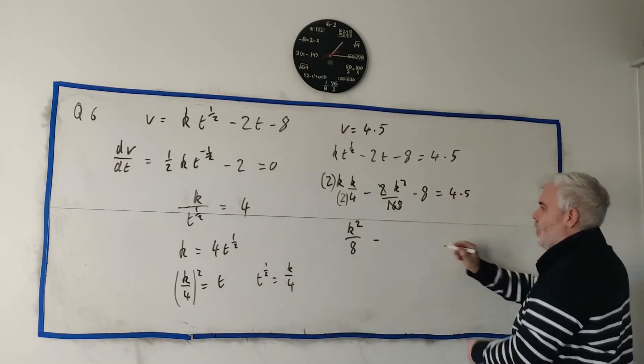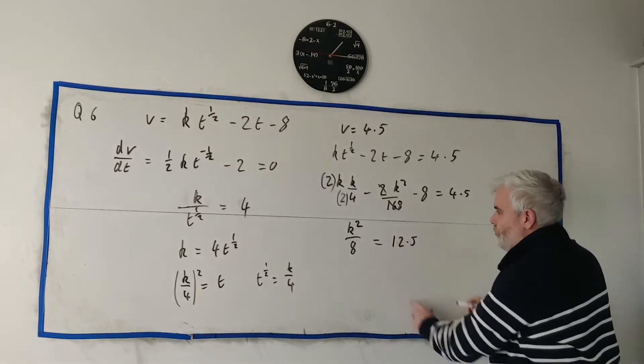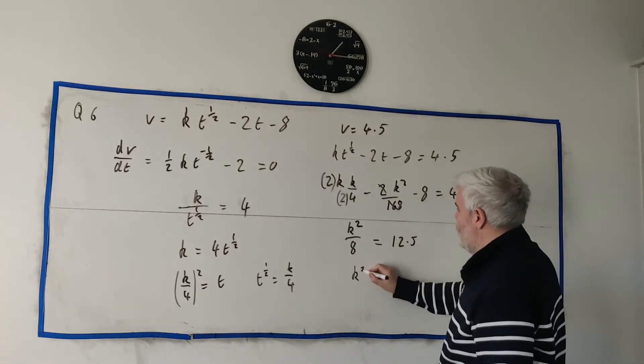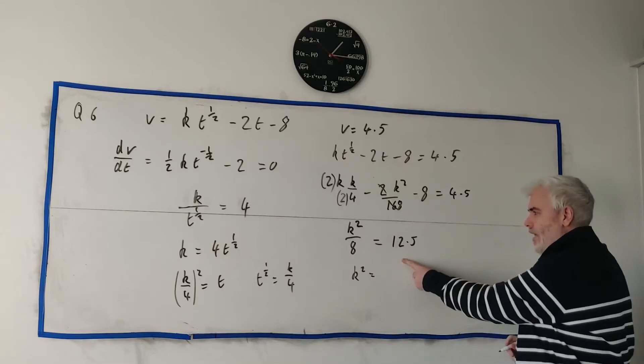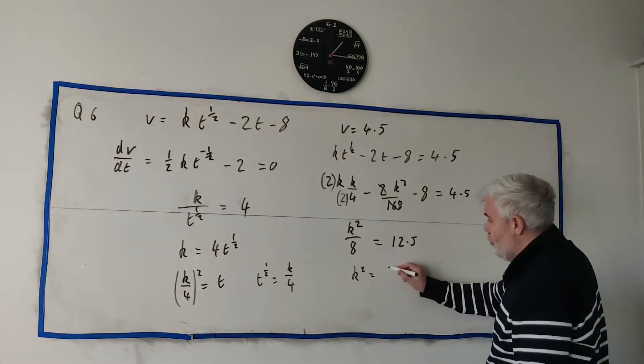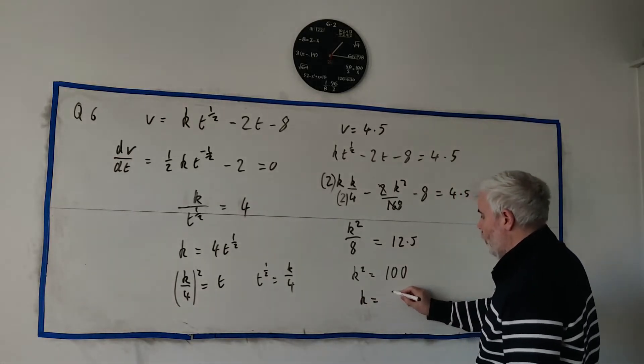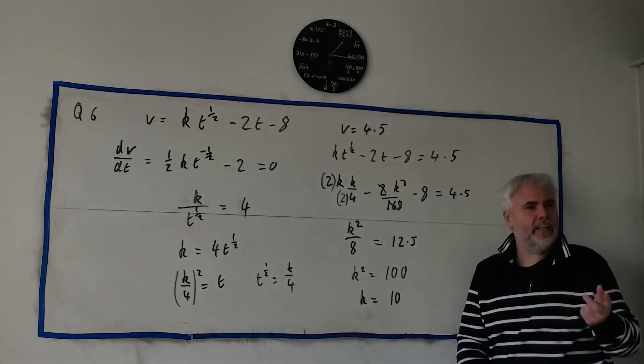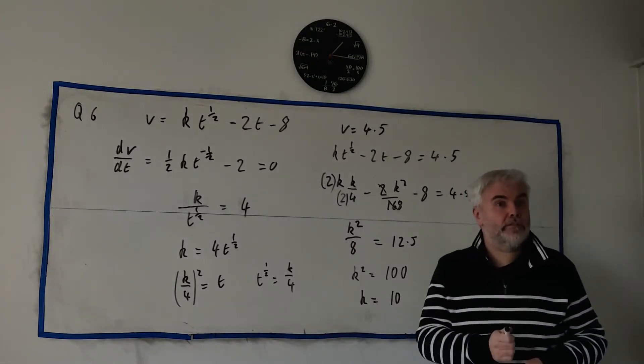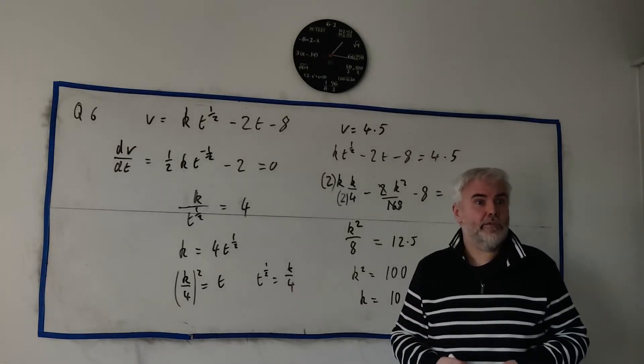Use a calculator if you want. But we just need this 4 to be an 8. So multiply by 2. And be fair, multiply the top by 2. And we get 2k squared minus 1k squared. That's k squared over 8. Let's move this 8 over. And we get equals 12.5. That's k squared is equal, multiply that by 8 is 100. And k then is equal to 10. Plus or minus 10. But they did tell us that k was a positive constant. So positive 10. And that's what they told us it was.